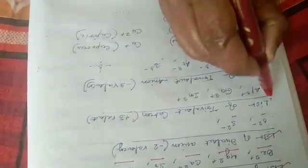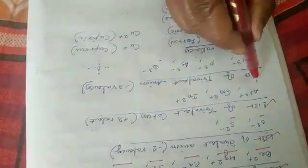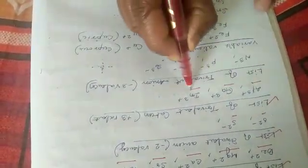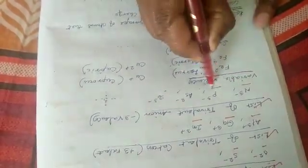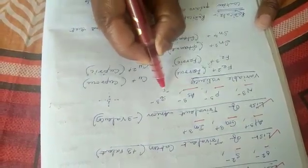List of trivalent cations: aluminum 3+, gallium 3+, indium 3+. List of trivalent anions: N3-, P3-, arsenic 3-, and antimony 3-.